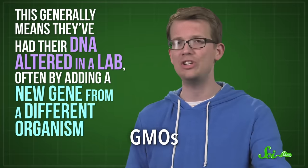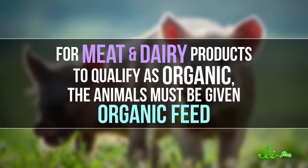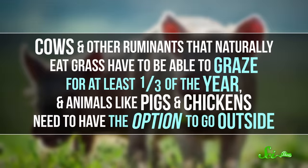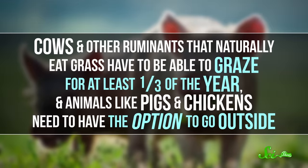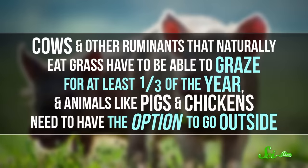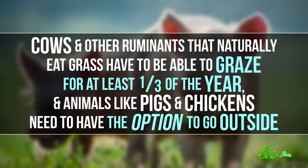For meat and dairy products to qualify as organic, the animals must be given organic feed. Cows and other ruminants that naturally eat grass have to be able to graze for at least a third of the year. And animals like pigs and chickens need to have the option to go outside.